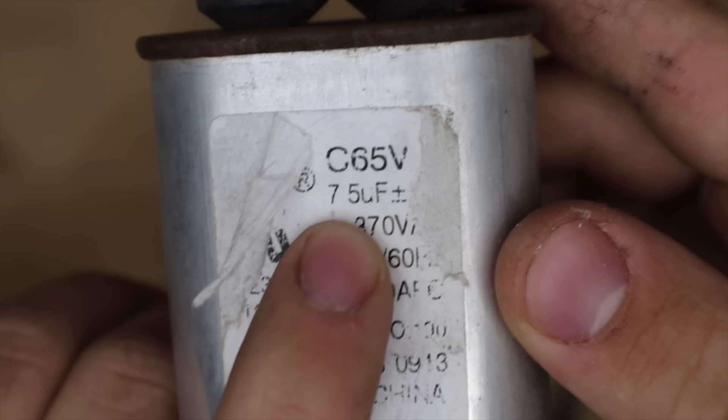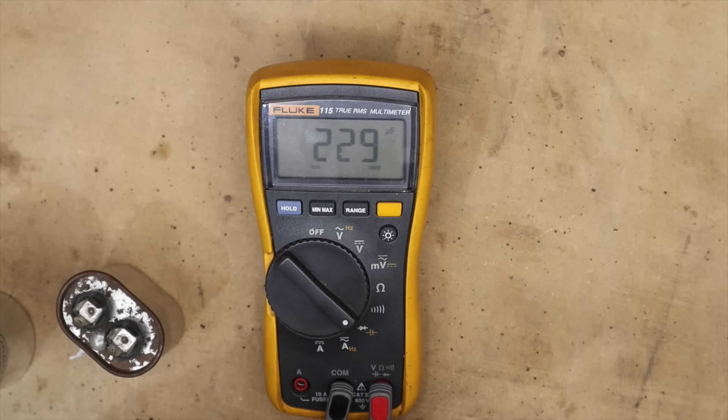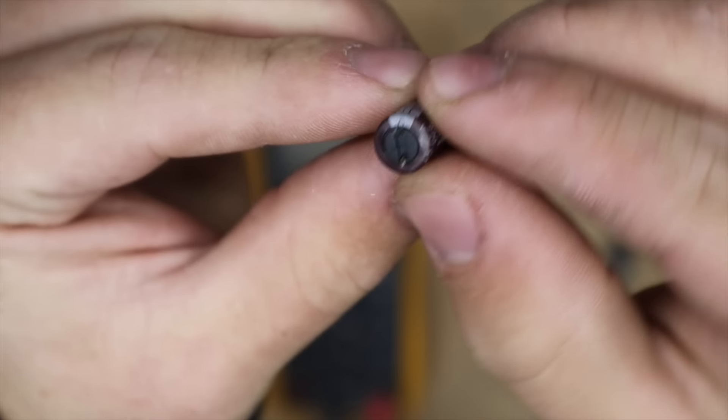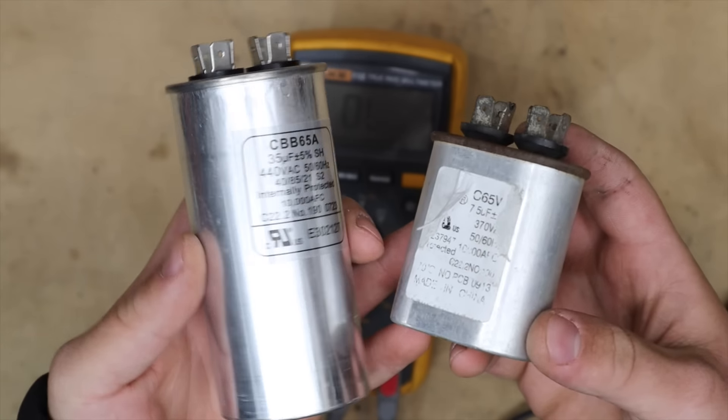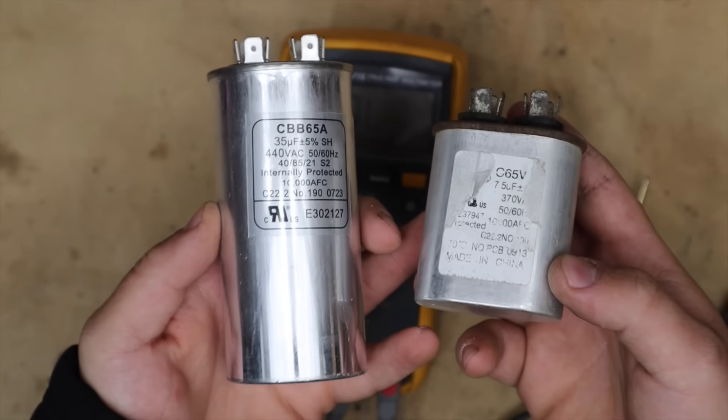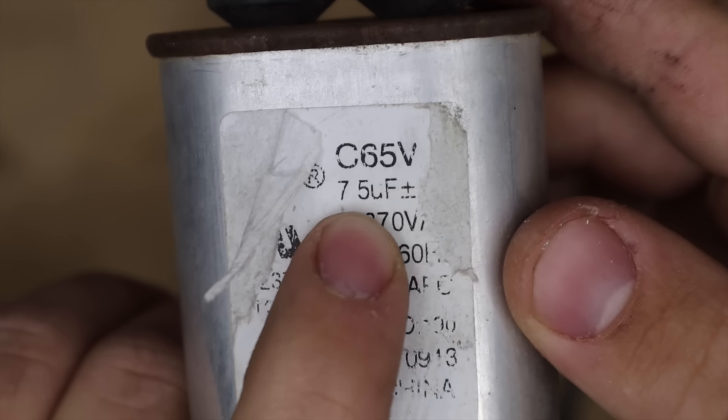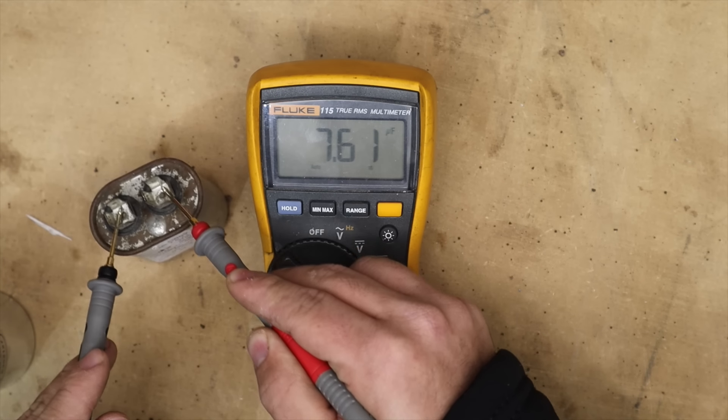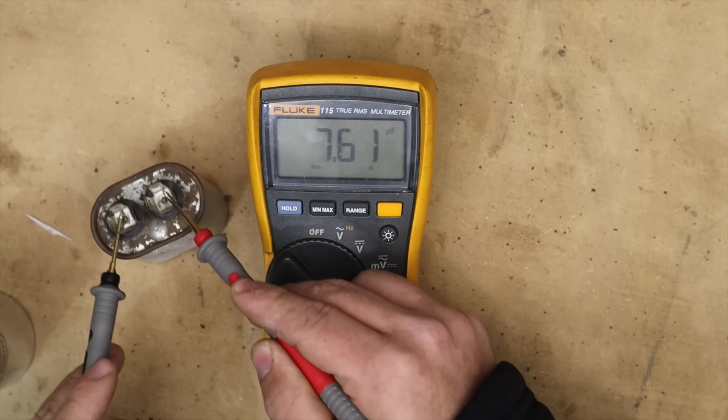Now usually farads are measured in the micro scale so you'll usually have this symbol meaning micro. This capacitor is reading 230 microfarads which is pretty standard. It will usually have some tolerances. We then have this one which is non-polarized at 7.5 microfarads with a five percent tolerance. If we test it we get a reading which is higher but it is within that five percent range.